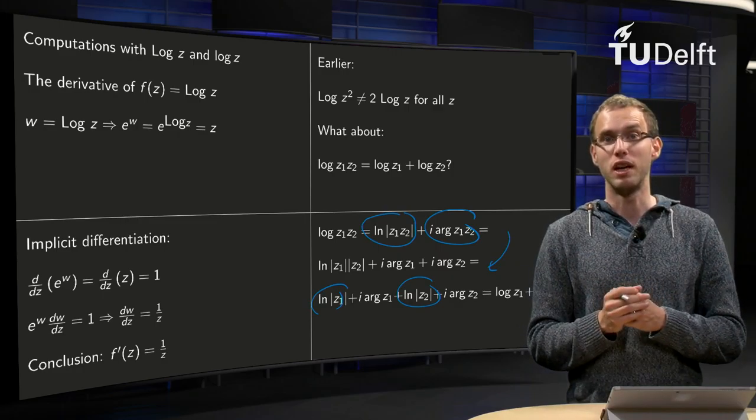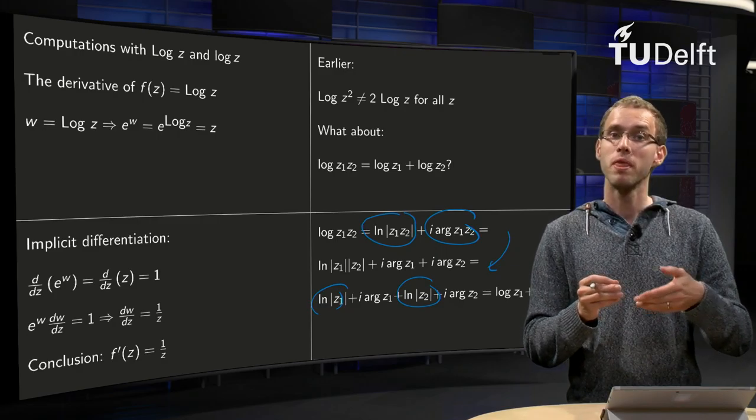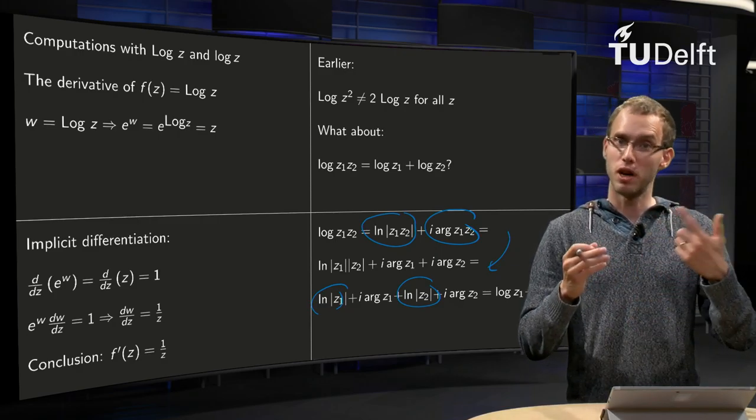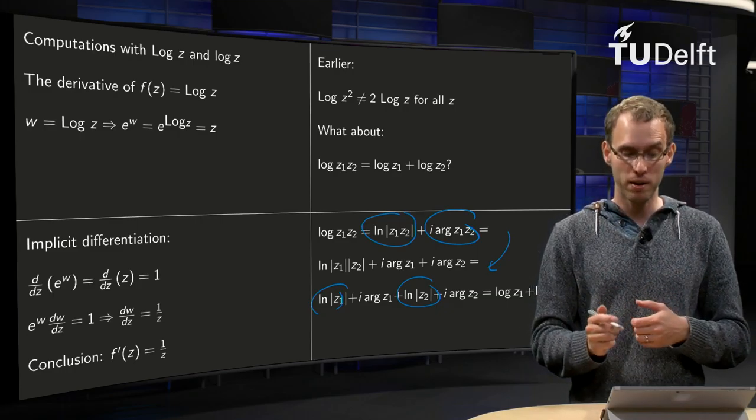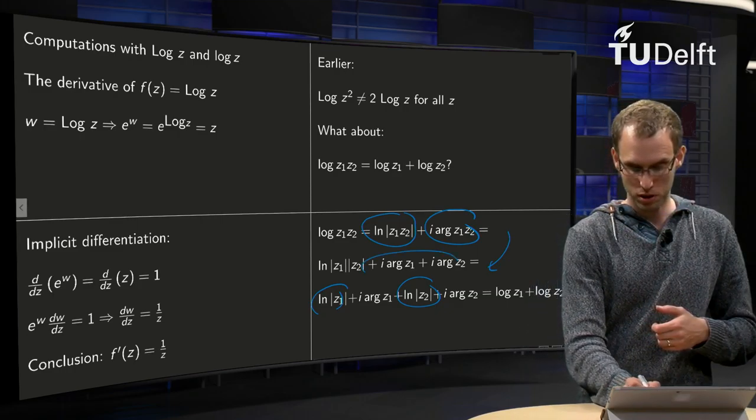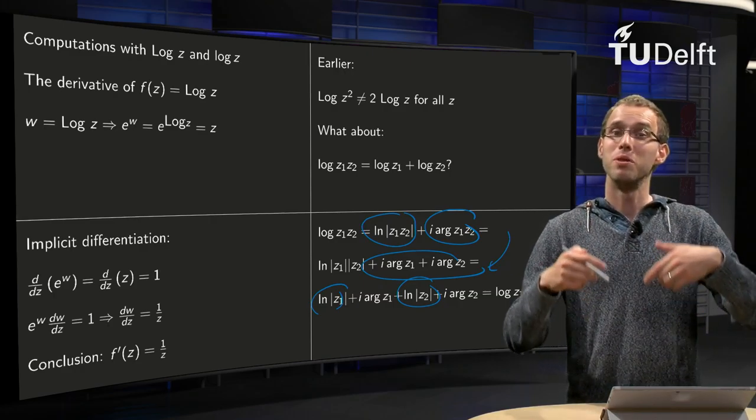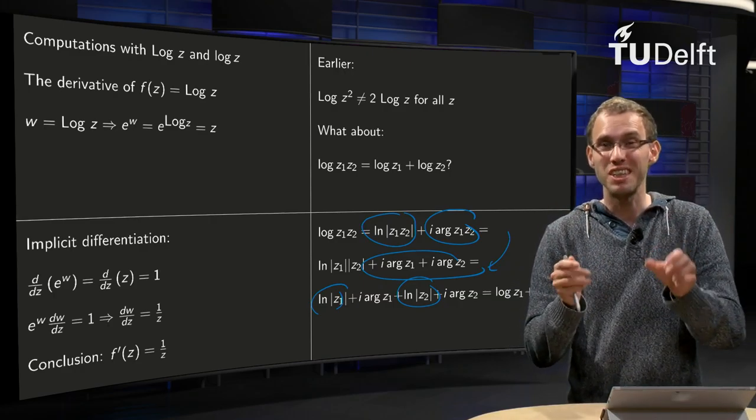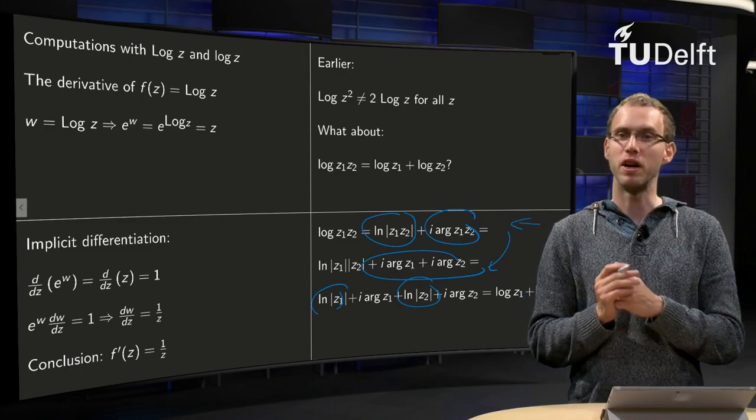That is of course the case for the argument of z1 times z2, because the argument of z1 times z2 equals the argument of z1 plus the argument of z2 plus some number of times 2π. The same holds for this expression over here. Maybe some other multiples of 2π, but you can choose those multiples such that they are equal to the multiple in this line over here.